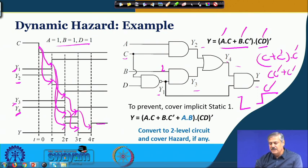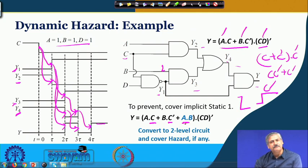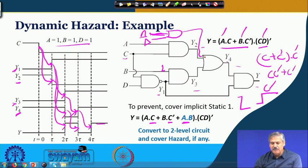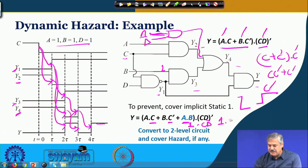Covering dynamic hazard is relatively more difficult than Static-0 and Static-1 Hazard. The inherent Static-1 hazard due to the C-plus-C-prime relationship, occurring for A equal to 1, B equal to 1, is identified. To cover it, an additional redundant term A·B is added — without making any difference in the truth table — as A·B comes in parallel, connecting to the circuit. When A, B, and D are all 1, this term holds at 1, and combined with C·D-prime simplifies to C-prime only, so only one transition takes place.